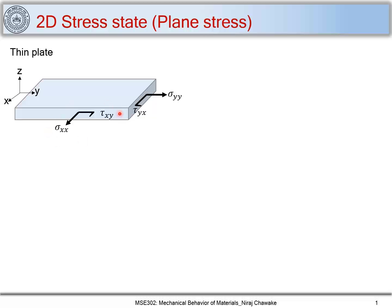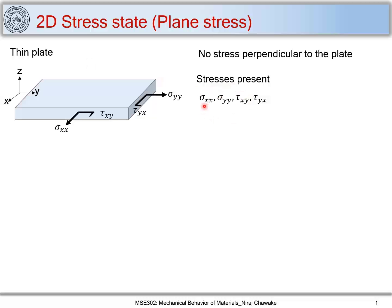Let me mark the stress components acting on this kind of plate. We have two normal stress components: σxx, which is the normal stress acting on the x-plane along the x direction, and σyy, the normal stress on the y-plane along y. τxy is the shear stress on the x-plane along y, and τyx acts on the y-plane along x. There is no stress perpendicular to z, so σzz = 0. The stresses present are two normal stresses and two shear stresses; stresses along or on the z-plane are zero.